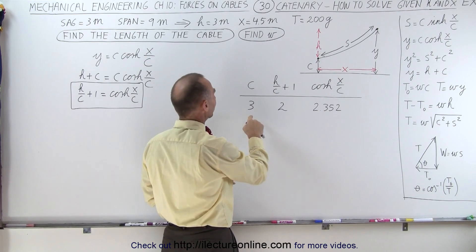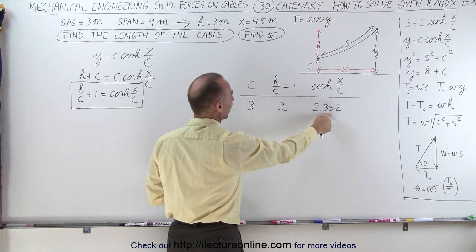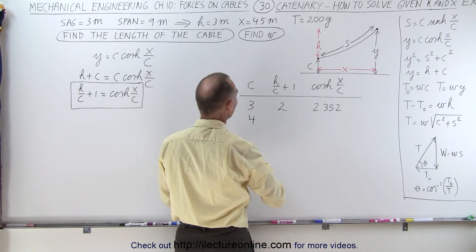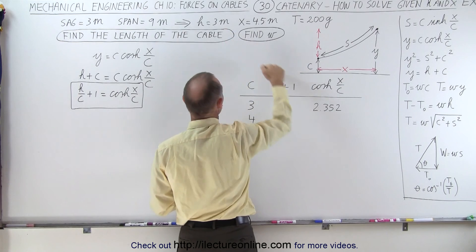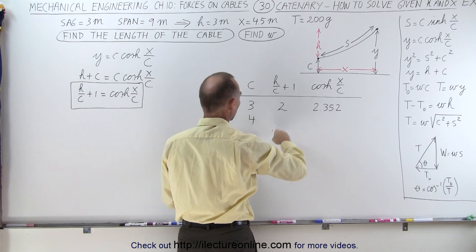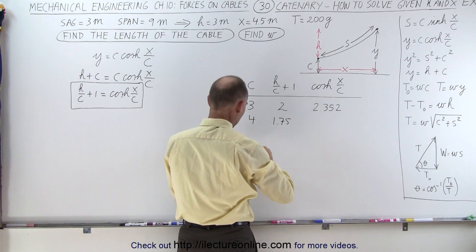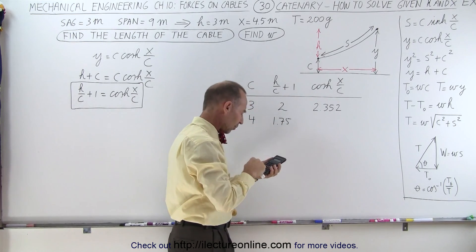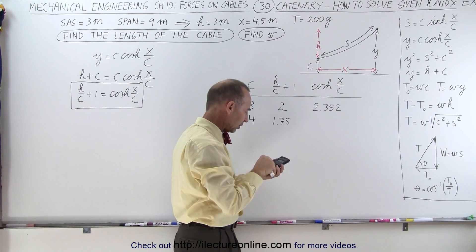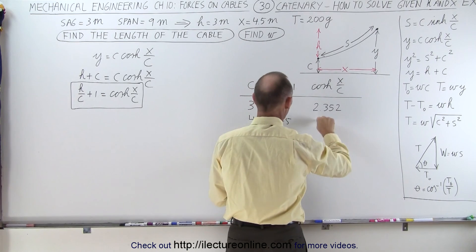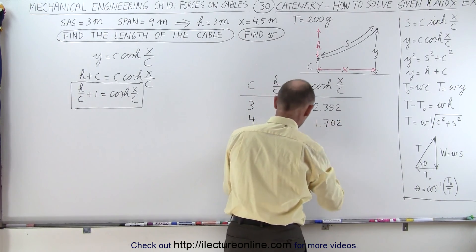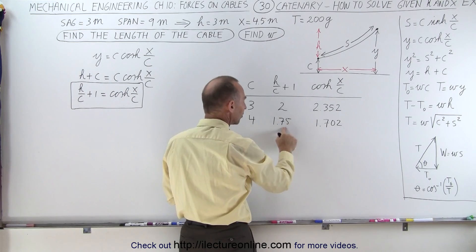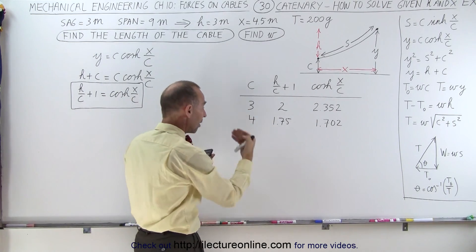Since the hyperbolic cosine value is too large, let's try a larger value for C, which will bring it down. Let's try C equal to 4. Then H over C plus 1 is 3 divided by 4 plus 1, which is 1.75. And the hyperbolic cosine of X over C is the hyperbolic cosine of 4.5 divided by 4, which gives 1.702. Now 1.702 is smaller than 1.75, meaning C equals 4 is too large. Let's drop back a little.